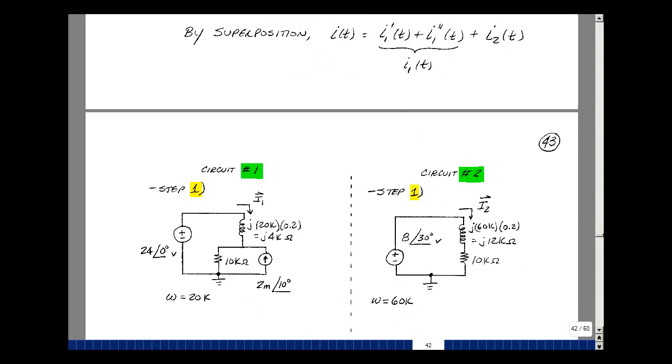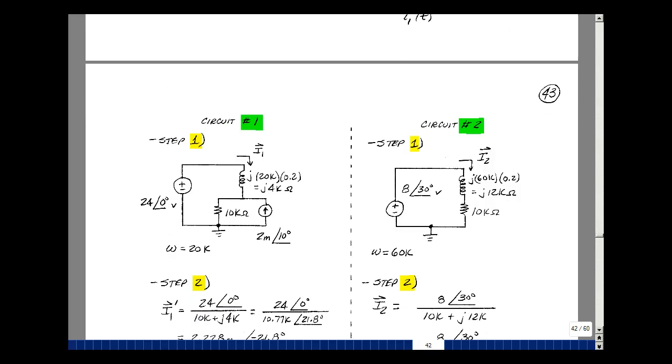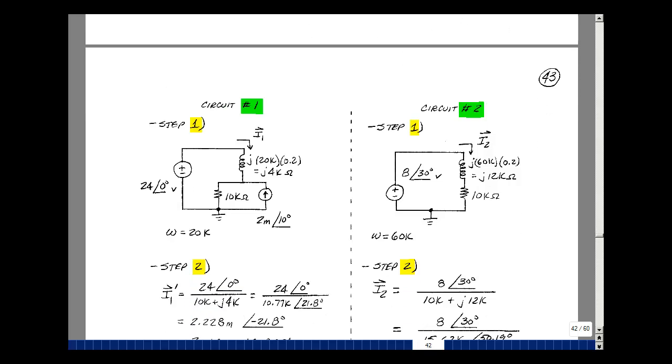So let's convert our circuits from the time domain to the frequency domain. We'll be doing step one for circuit one and circuit two. So 24 at angle zero with an omega of 20 kiloradians per second, two milliamps at angle 10, 10k ohms, and then j omega L. So 20k for omega and 200 millihenries for the inductor. That gives me j4000. In this circuit, I've got eight at angle 30 for the source with an omega of 60 kiloradians per second, my 10k resistor, and now j omega L. So 60k times 200 millihenries. I get j12k.